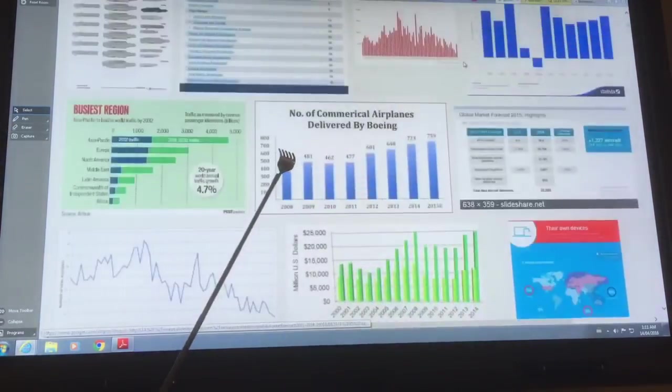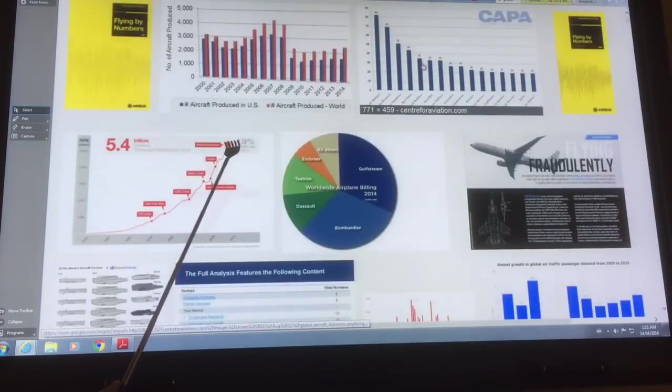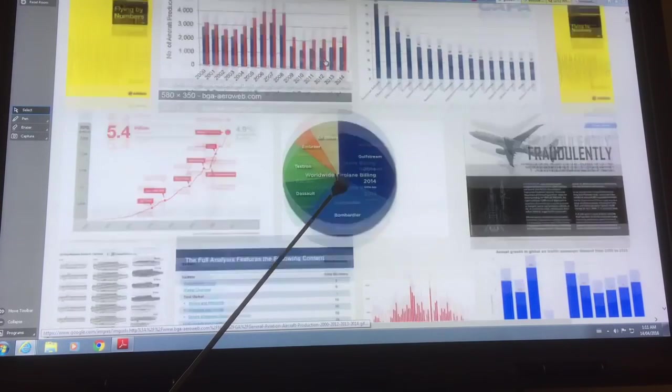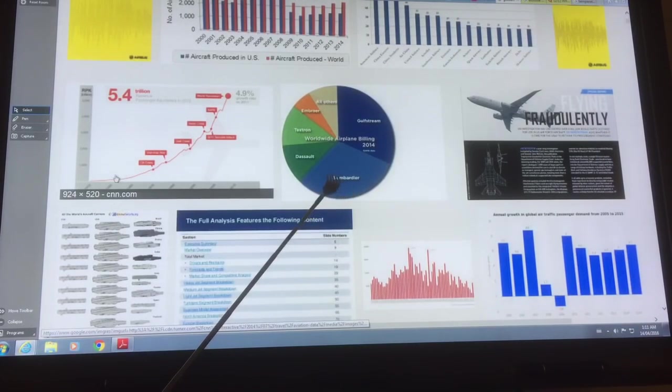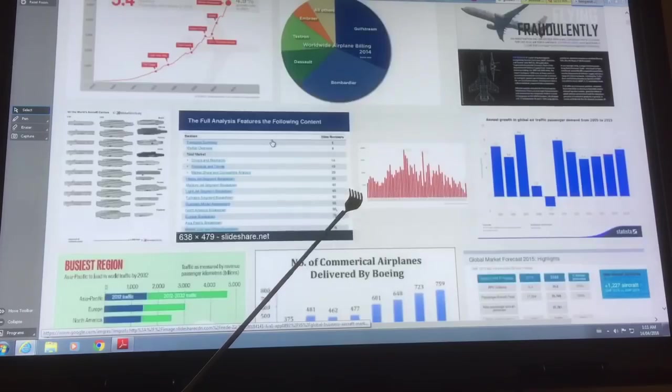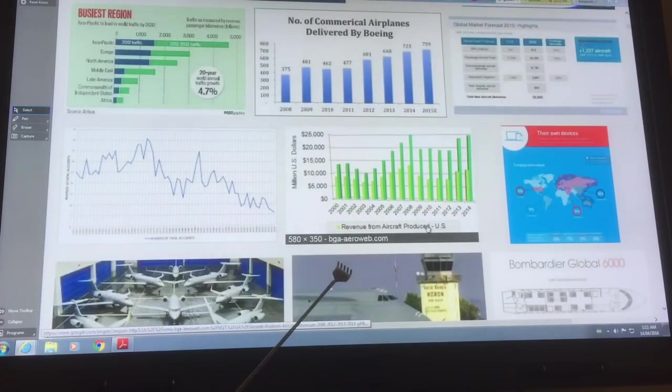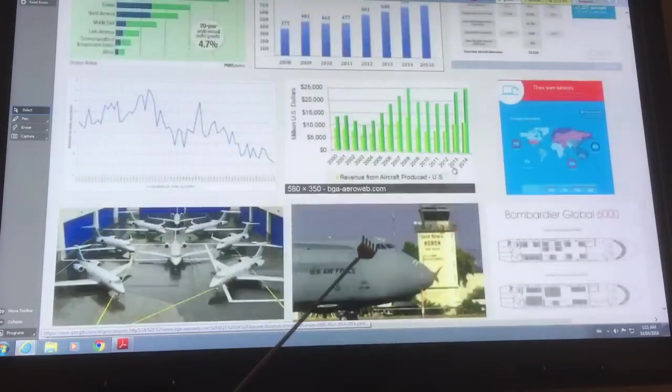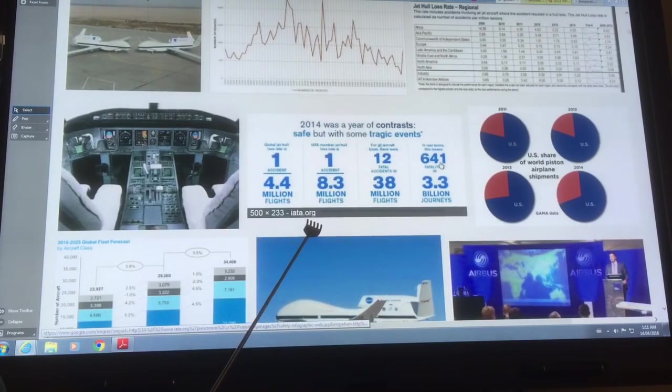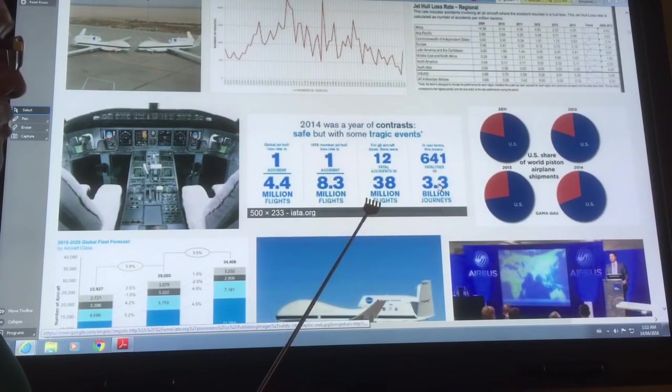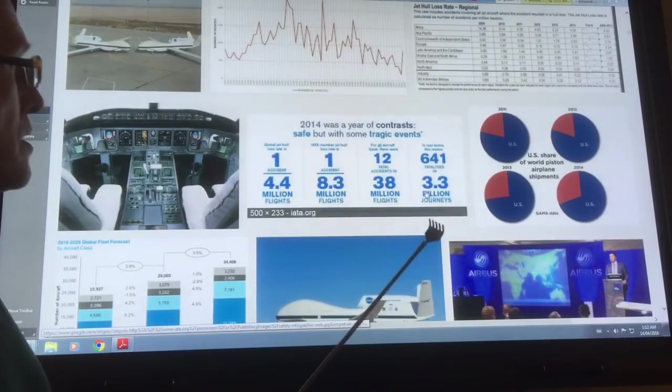Let's look at the number of aircraft now. Global aircraft numbers, aircraft produced worldwide. We produced a lot back here, then oil prices went up pretty high, production went down. Passenger kilometers in 2012 increasing growth. Number of commercial airplanes delivered by Boeing increasing. Revenue from aircraft production, I don't need to go into a lot of details. But 2014 for example, there were 38 million flights, 12 fatal accidents, that's 3.3 billion journeys. It's still a lot safer to fly than walk across the street, but there's more and more planes.